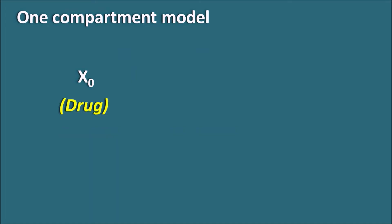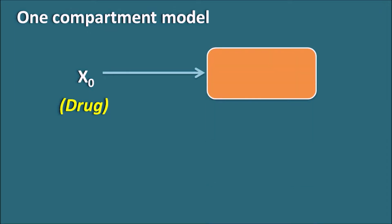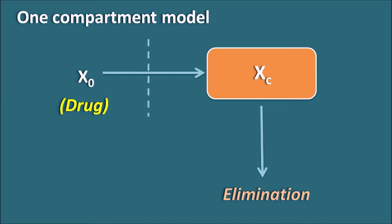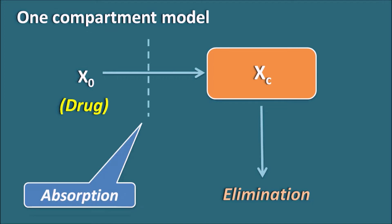X0 is the amount of the drug that we are going to initially administer into the body. This drug enters into the single compartment where the amount of the drug is indicated by Xc, and the drug can be eliminated out of the body from the same compartment. This is the simple design of the one compartment model. We can also have another phase where the drug enters into the systemic circulation through a barrier — this barrier is the absorption phase.